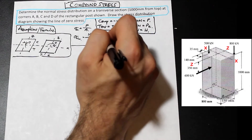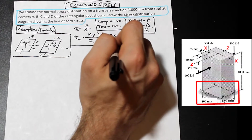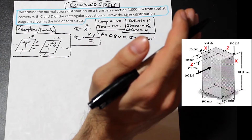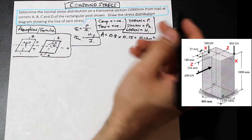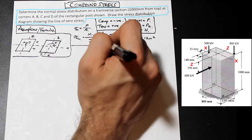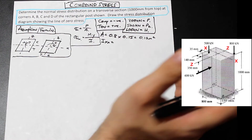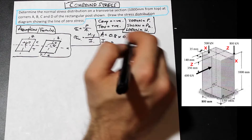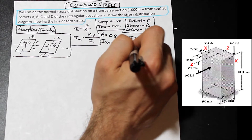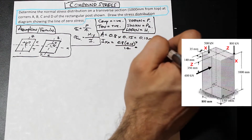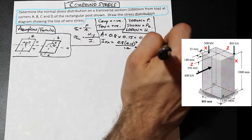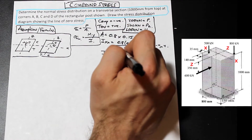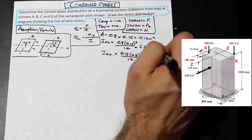Let's find the area — doing everything in meters: 0.8 times 0.15 gives a total area of 0.12 m². Now let's find the moment of inertia in X and Z. About the X axis, with height 0.15 and base 0.8: 0.8 times 0.15³ over 12 gives IX = 2.25 × 10⁻⁴ m⁴. In the Z direction, with height 0.8 and base 0.15: IZ = 6.4 × 10⁻³ m⁴.